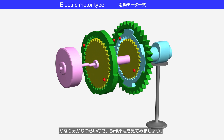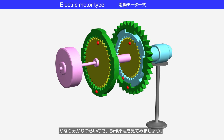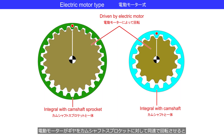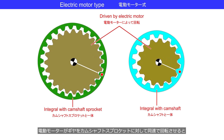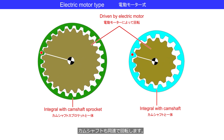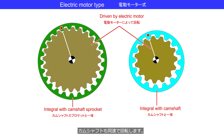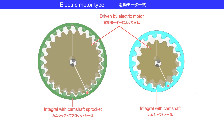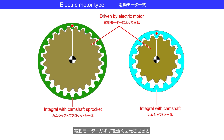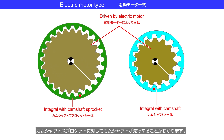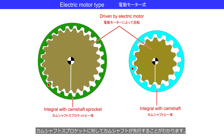This operating principle can be difficult to understand. When the electric motor rotates the gears at the same speed as the camshaft sprocket, the camshaft also rotates at the same speed. When the electric motor rotates the gears faster, it is observed that the camshaft leads the camshaft sprocket.